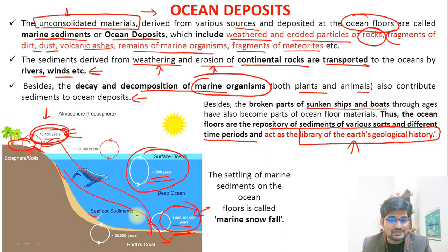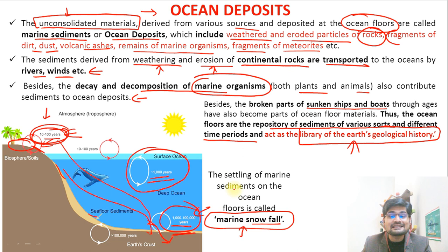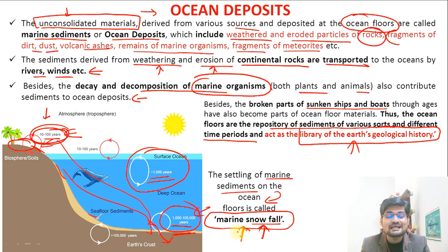There is another terminology associated here: marine snowfall. Snowfall happens on Earth's surface, but when marine sediments settle on the ocean floor, that phenomenon is also known as marine snowfall. So marine snowfall is not about surface snowfall; rather, it refers to these depositions gradually settling layer after layer on the ocean floor.